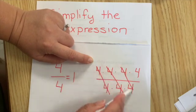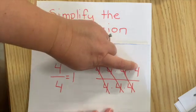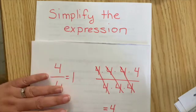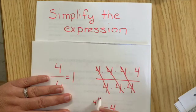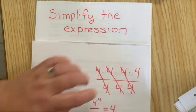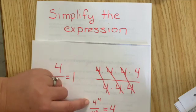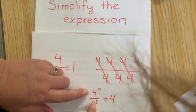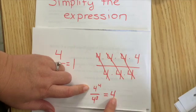And what's left is just four, which means this was four to the fourth, and this was four to the third. So four to the fourth divided by four to the third equals just four.